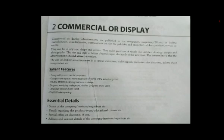After that, I would like to talk about the second part: commercial or display advertisements. Commercial or display advertisements are published in newspapers, magazines, TV, etc., by leading manufacturers, establishments, and organizations for the publicity and promotion of their products, services, or events. They can be of any size, shape, and color. They make good use of visuals like sketches, drawings, designs, and photographs. The size and style of letters depends upon the needs of the advertiser. The bottom line is that the advertisement should attract attention.